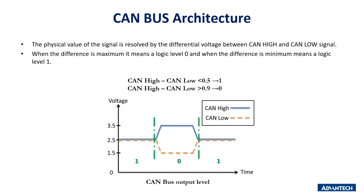The CAN bus physical layer consists of three signals: CAN high, CAN low, and ground — shared by all nodes on the network. The physical signal value is resolved by the differential voltage between CAN high and CAN low. When the difference is greater than 0.9V it means logic level 0; when below 0.5V it means logic level 1. This differential signaling allows high noise immunity because noise affects both wires equally, keeping the difference the same. This enables baud rates up to 1 Mbit/s with higher redundancy.